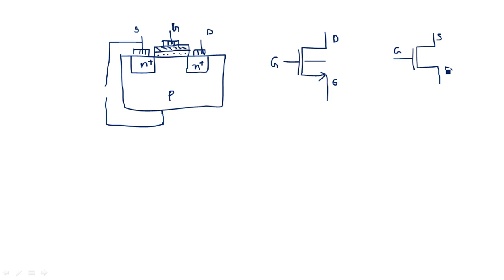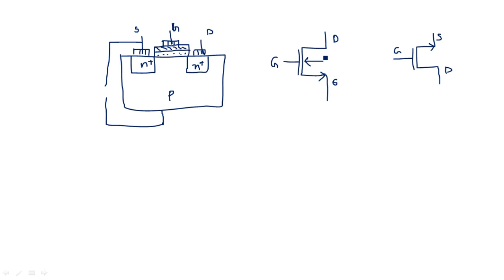Normally when you use a MOSFET in circuit operations you consider it without the fourth terminal — just gate, source, and drain with an arrow mark. This is the symbolic representation for general circuit operations. But when you go into simulation tools like Mentor Graphics or Cadence, the transistor will have a fourth terminal, which is known as the substrate.